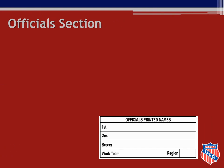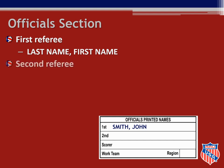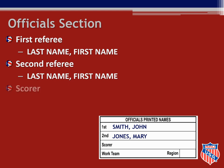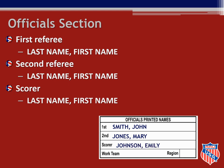Next, still using pen, you will fill in the officials printed name section again written in all capital letters. The first referee for the match is John Smith and the second referee is Mary Jones. You record John's name in the first referee section writing his last name first followed by a comma and then the first name. You'll use this same format for all names recorded on the sheet — last name, comma, first name. Fill in Mary's name in the second referee box. The scorer's name Emily Johnson is entered in the scorer's box. The work team is the name of the team providing the support crew for the match; for this match the work team is purple and they are from the Florida region.